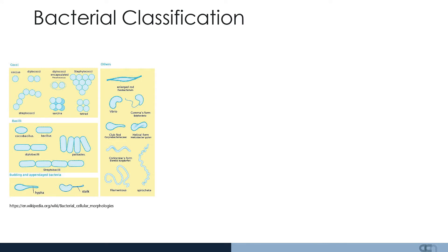Bacteria can be classified by their shape. Cocci or circular bacteria can be individual, called a Coccus; if there are two, called Diplococci, and these can be capsulated. Strips of Cocci are known as Streptococci, or clusters, for example Staphylococci. Bacilli can also cause infections, as well as budding and appendage bacteria which have hyphae or stalks. There are also other forms of bacteria such as Vibrio, Club Rod, Corkscrew or Spirochetes.